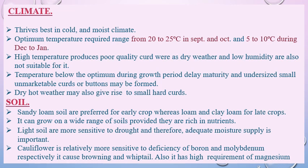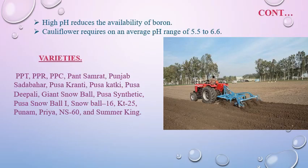Soil suitable for the cultivation of cauliflower: sandy loam soil is preferred for early crops, whereas loam and clay loam are preferred for late crops. It can grow on a wide range of soils provided they are rich in nutrients. Light soils are more sensitive to drought and therefore adequate moisture supply is important. Cauliflower is relatively more sensitive to deficiency of boron and molybdenum. High pH reduces the availability of boron, and cauliflower requires an average optimum pH.